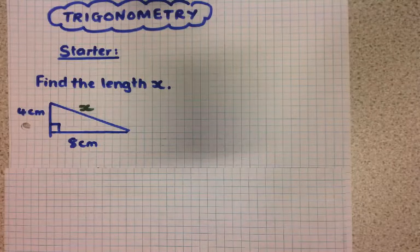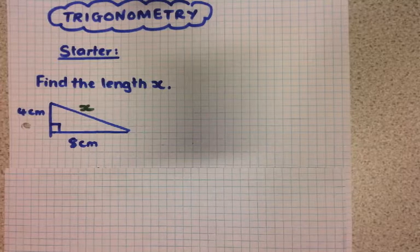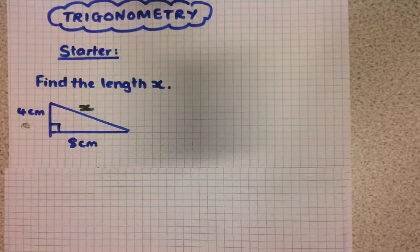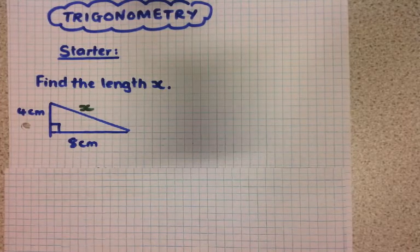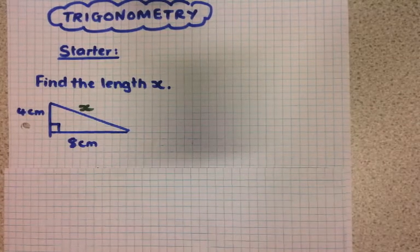This lesson is to do with trigonometry and we can apply trigonometry to right angle triangles. But to start with, I want you to find the missing length x on this right angle triangle. So you might want to pause the video here and I'll come back with an answer.